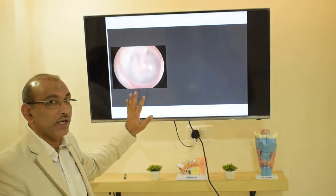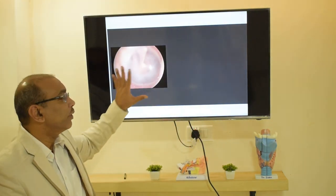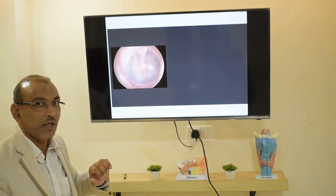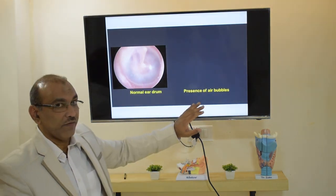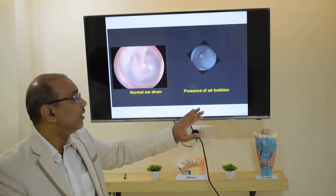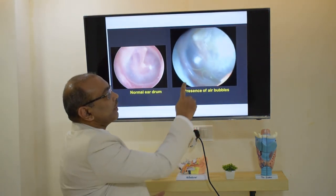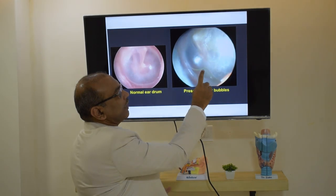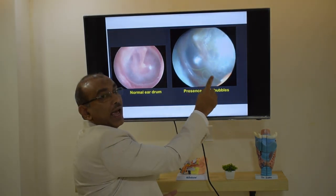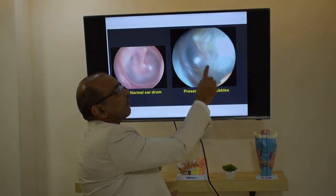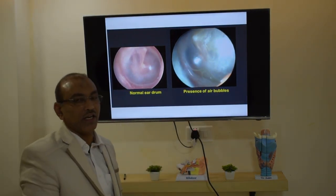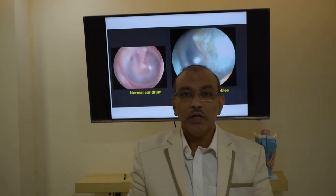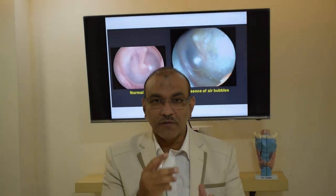First, let me show you a picture of a normal eardrum — this is how it looks. Next, I will show the secondary effect: here you can find fluid collection, a fluid level, and presence of an air bubble. These are the secondary effects in the ear.